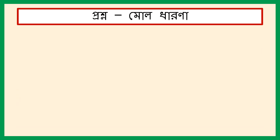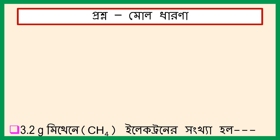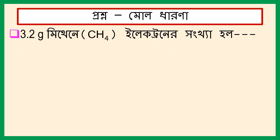Chemistry class A. Pratyek ke saagoto proshna mol dharana thake. 3.2 gram methane-er electron-er sankha holo — apsan guli holo.